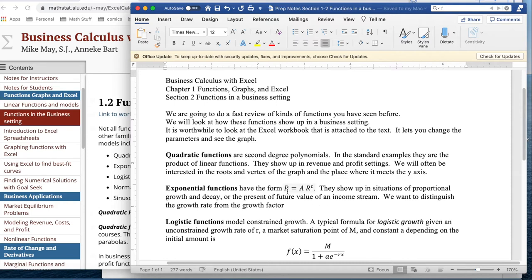Exponential functions show up in growth. P equals A times R to the T, where R is a growth rate of some sort, and this will show up in present and future value of income streams. We want to distinguish the growth rate from the growth factor, the percentage increase from 1 plus that percentage increase.